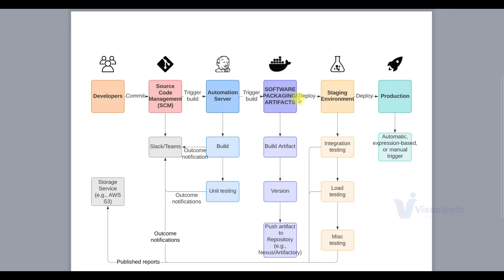The next job then gets triggered automatically, which will deploy the artifact to the staging environment. Once deployed to staging, there will be further tests — integration tests, load tests, and software testing. Test scripts will be executed from a Windows server to check the staging environment for any bugs or errors. If everything is good, a notification will be sent, and the artifact can be stored in S3 or Nexus for production deployment — this will be a well-tested artifact. In Continuous Delivery, we don't automatically deploy to production; we wait for approval. Once we have approval, a job is triggered to deploy to the production environment.